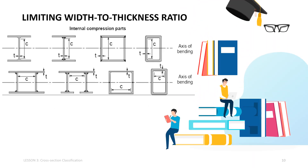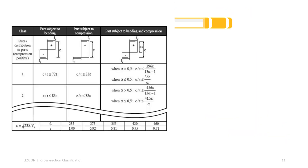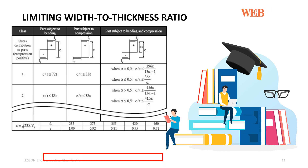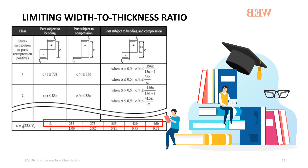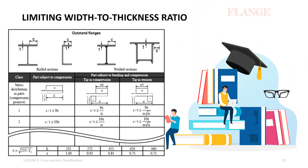The most important limiting proportions of the elements of a cross section — the width to thickness ratio — which enable the appropriate classifications to be made, are specified in Eurocode 3. Eurocode 3 gives the limiting proportions for compression elements for Classes 1 to 3. The limiting values of the width to thickness ratio apply to members in steel of a specific yield strength. The table shows the limiting width to thickness ratio for outstand flanges.